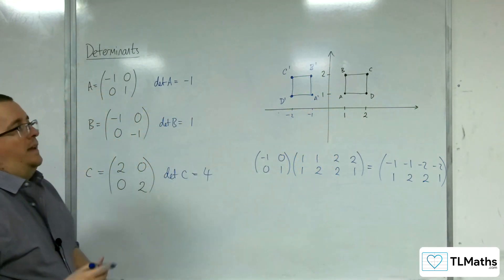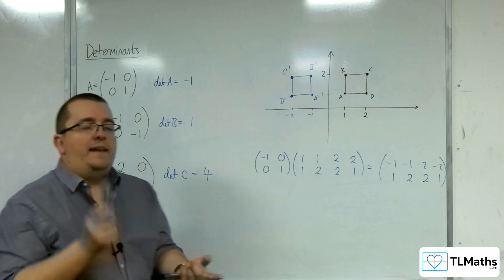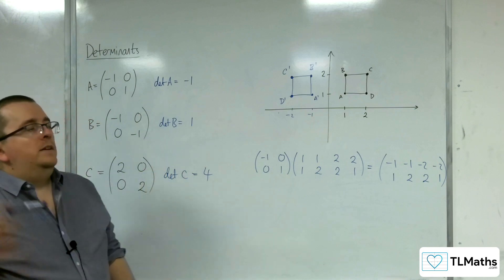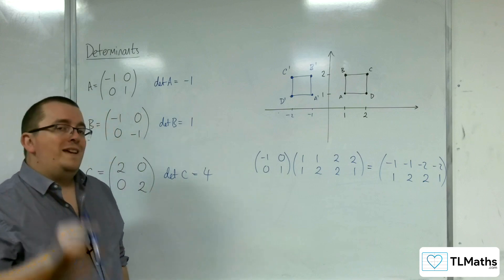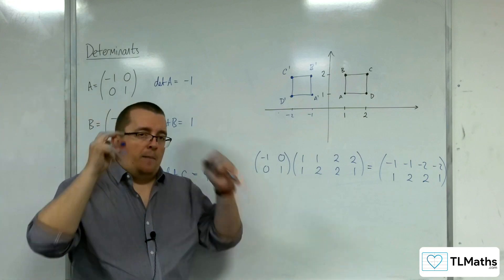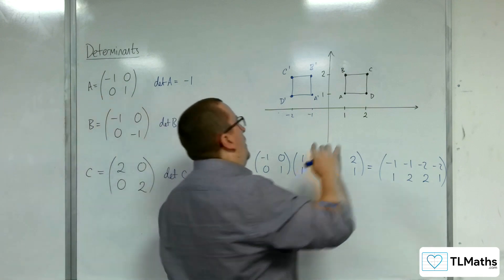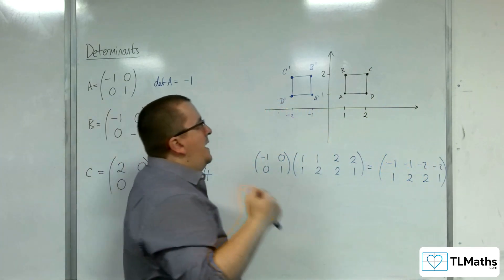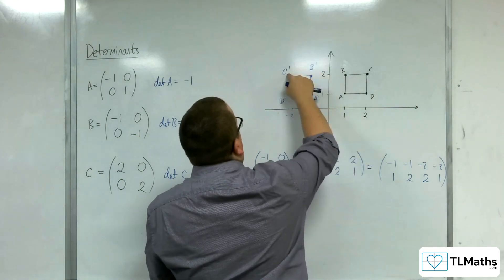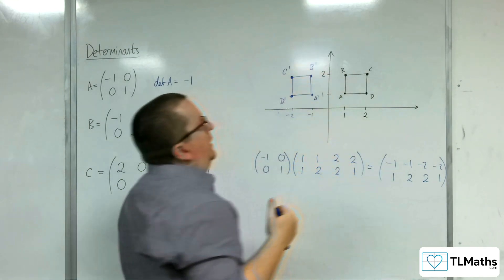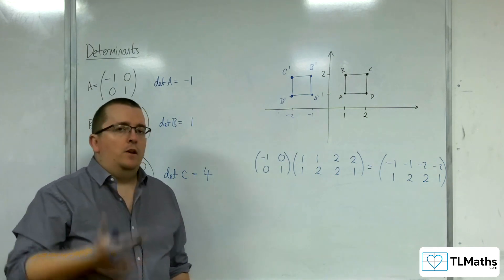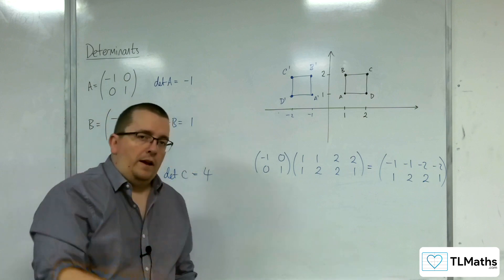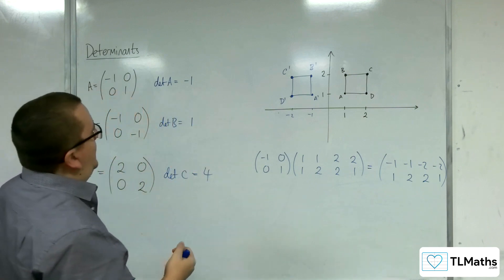So what you should be seeing, firstly, is that clearly this matrix represented a reflection in the y-axis. The second thing is actually the orientation of the shape. And by that, I mean I would be reading A, B, C, D going clockwise round here. But now I've got A prime, B prime, C prime, D prime going anticlockwise. So the reflection caused the reversal of the orientation of the vertices, reversing the direction from clockwise to anticlockwise.